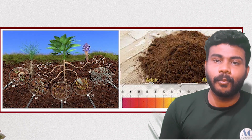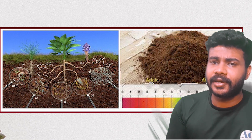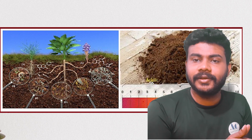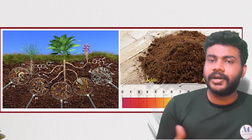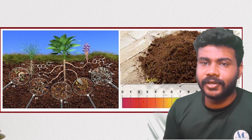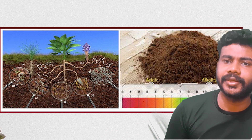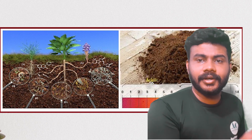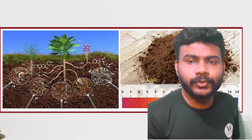Most of the regions of semi-arid and arid areas possess the classification criteria of alkaline soil or sodic soil, which have high sodium concentration. Regions like Gujarat, some areas of Haryana and Punjab, and South Indian coastal regions have sodicity and sodic soils.